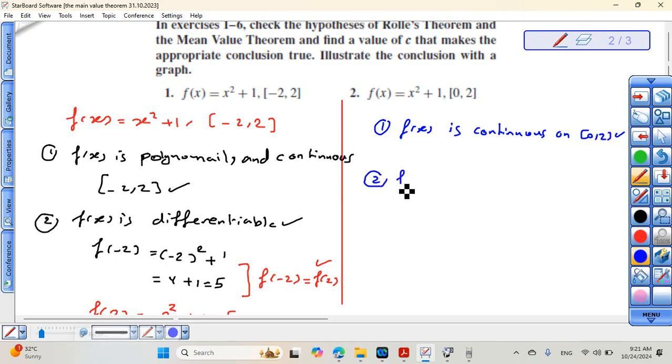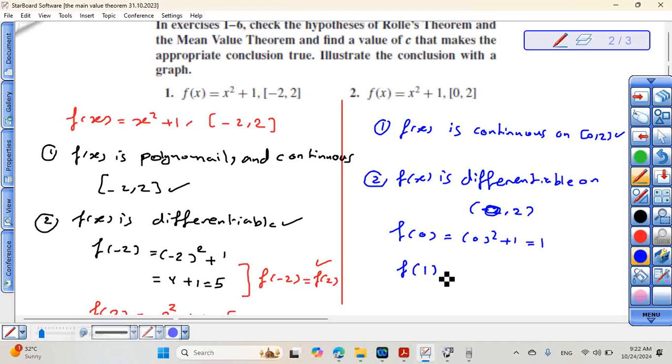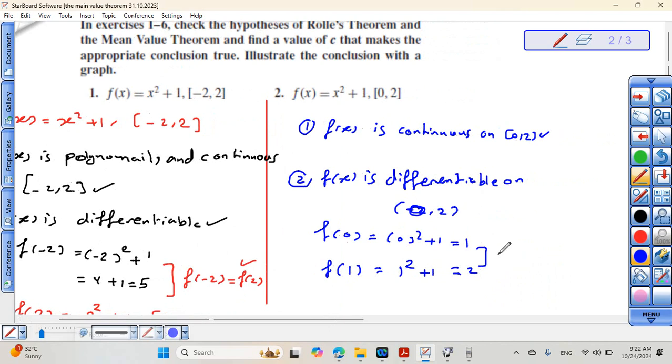To check here, f of 0 equals 0 squared plus 1, which equals 1. And f of 2 equals 2 squared plus 1, which equals 5. It cannot be equal. f of 0 is not equal to f of 2.